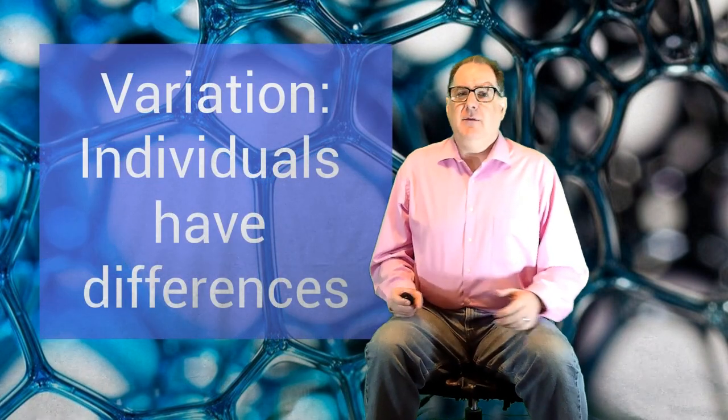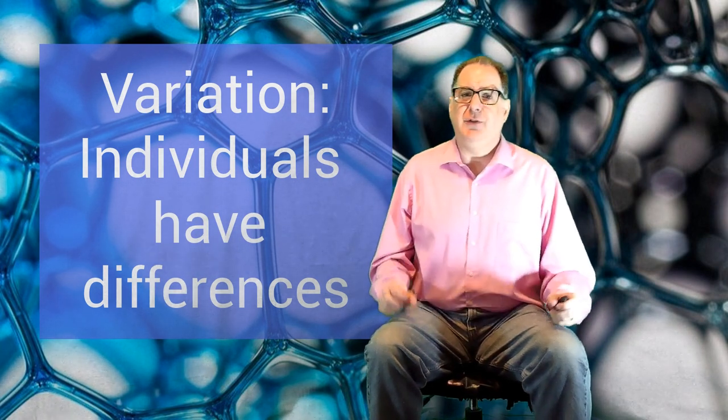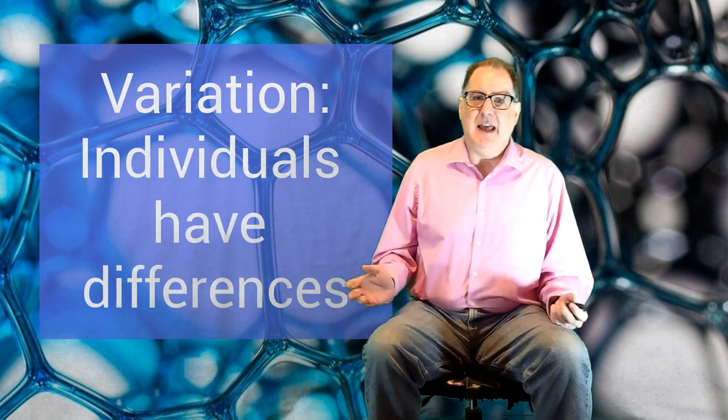Selective breeding works because of variation. Variation just means that there are differences between individuals in a species, be they dogs, bananas, or any other species. By the way, this also means that all the food you eat is genetically modified. Farmers have been choosing which traits to breed for, which alters the genetics. It's not done in a lab and it takes a while, but the flour in your bread came from selectively bred wheat — wheat that has desirable traits. In short, genetically modified.